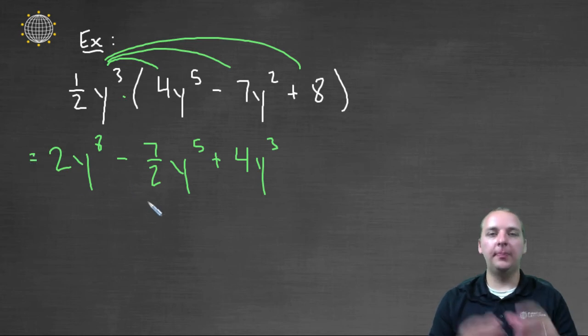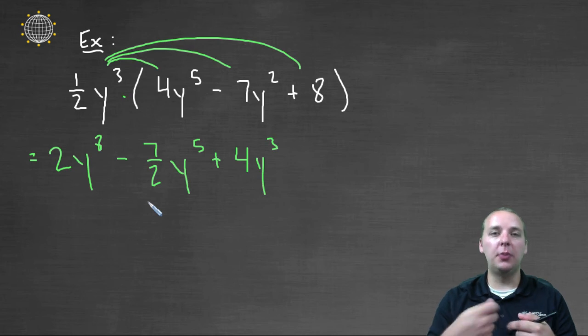So basically, a monomial times a polynomial, you just use the distributive property to distribute this guy through all the terms.